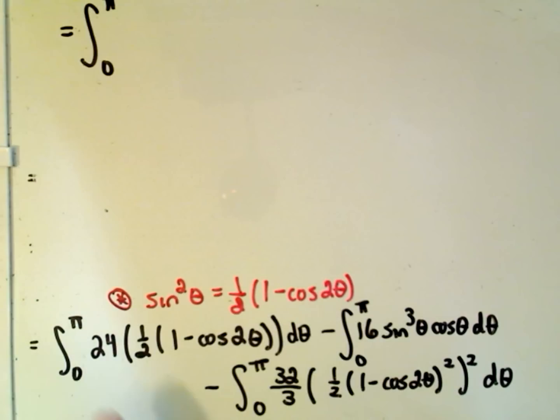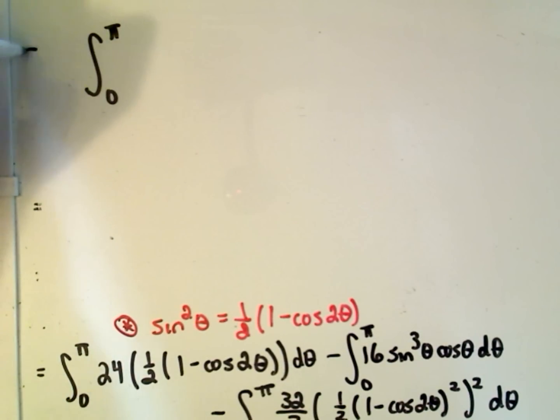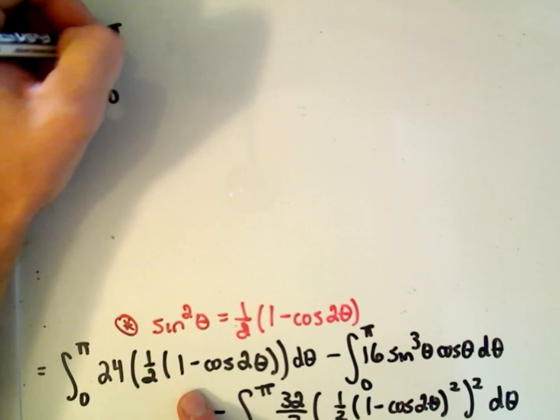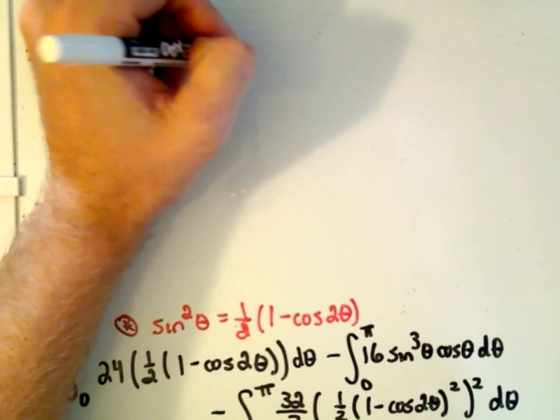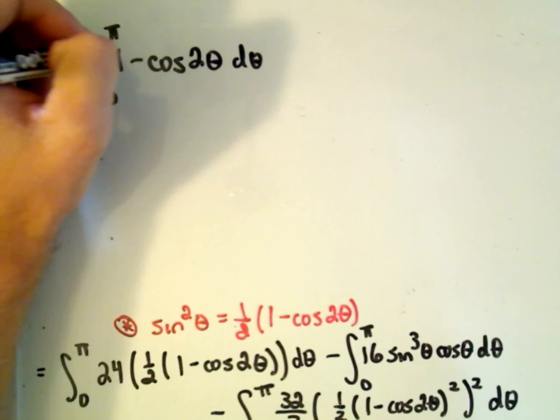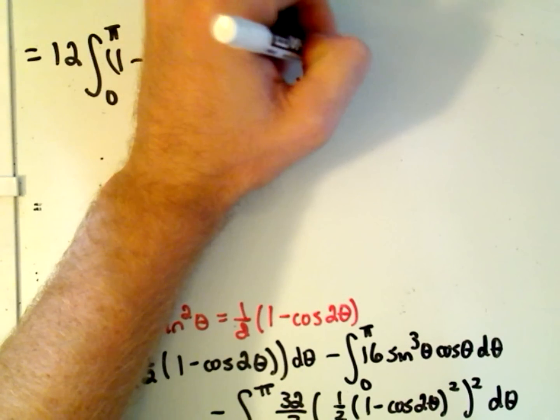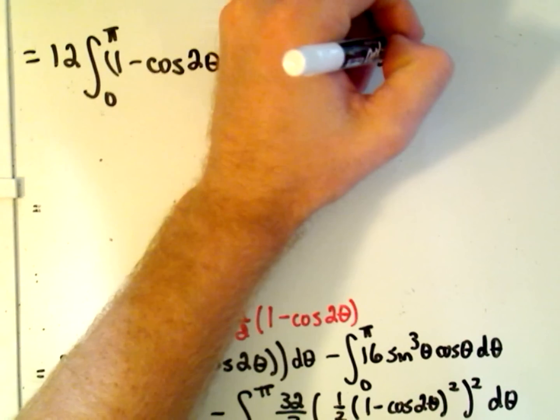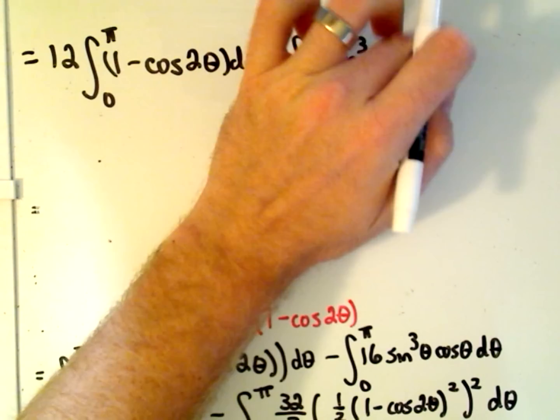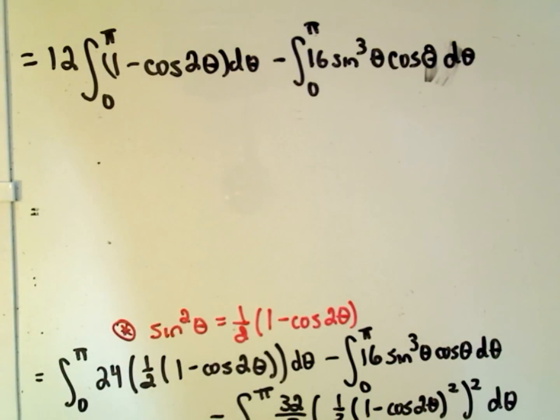So 0 to π. The first part, I'll get 24 divided by 2, which is just going to give us 12. And I'm actually going to factor that out front. So I'm going to pull the 12 out front, and then I would have (1 - cos2θ) left over dθ. Then we would have to subtract away the integral from 0 to π of 16 sin³θcosθ dθ.